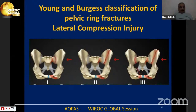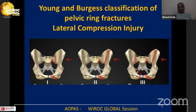The anterior lesions due to a lateral compression injury may be on the ipsilateral side and/or the contralateral side relative to the posterior injury. You can have all four rami fractured, but they are fairly undisplaced. Posterior injuries may range from just an anterior sacral fracture to a complete fracture of the sacrum.